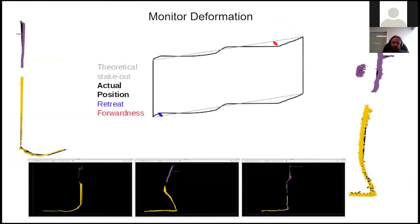The advantage of this is that we can easily monitor deformation of marine infrastructure. For example, this is data from a survey acquired in 2019 at the Port of Montreal, where we compare different vertical surfaces of the docks.